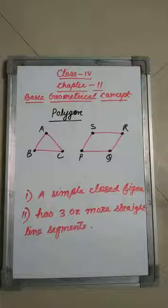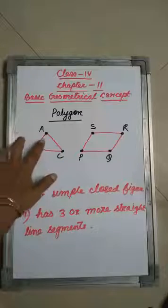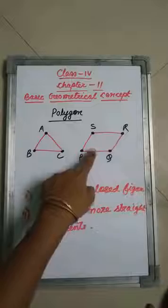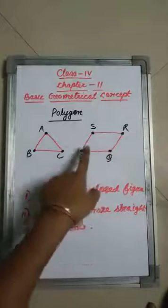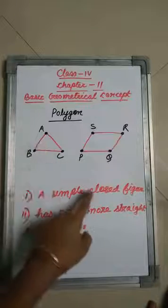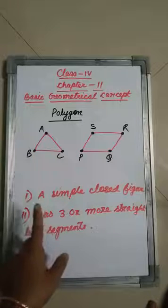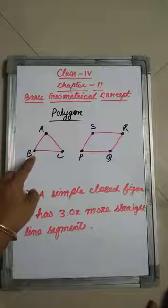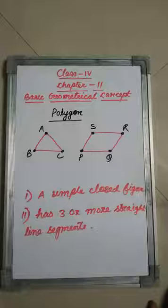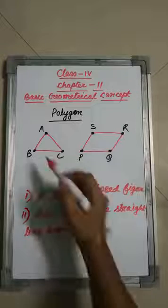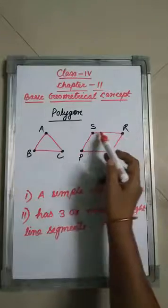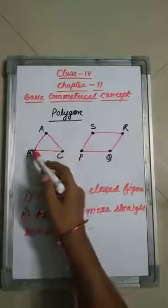A polygon is a closed figure — that means there is no opening in the figure. Polygons are always simple closed figures. No two lines cross any other line in the figure; they do not cross each other. A polygon must have three or more line segments. The lines must be straight lines.